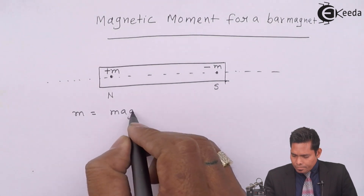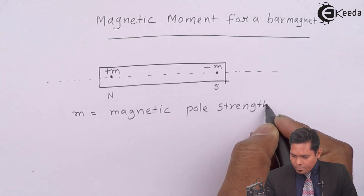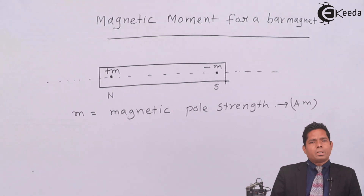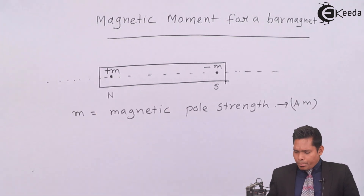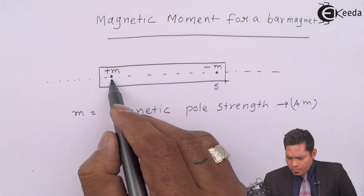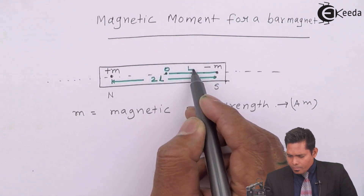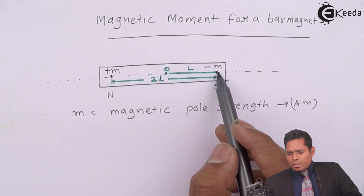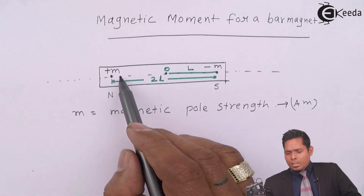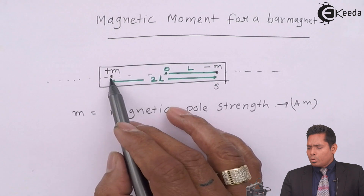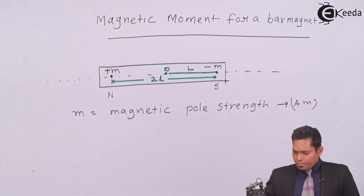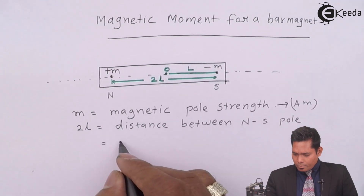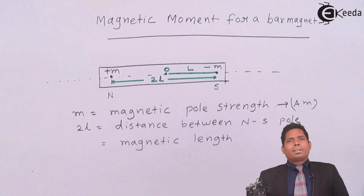This small m is called magnetic pole strength, and its unit is ampere meter. The distance between the two poles — from center to one pole is l, and from center to the other pole is also l, so the total distance between the two poles is 2l.